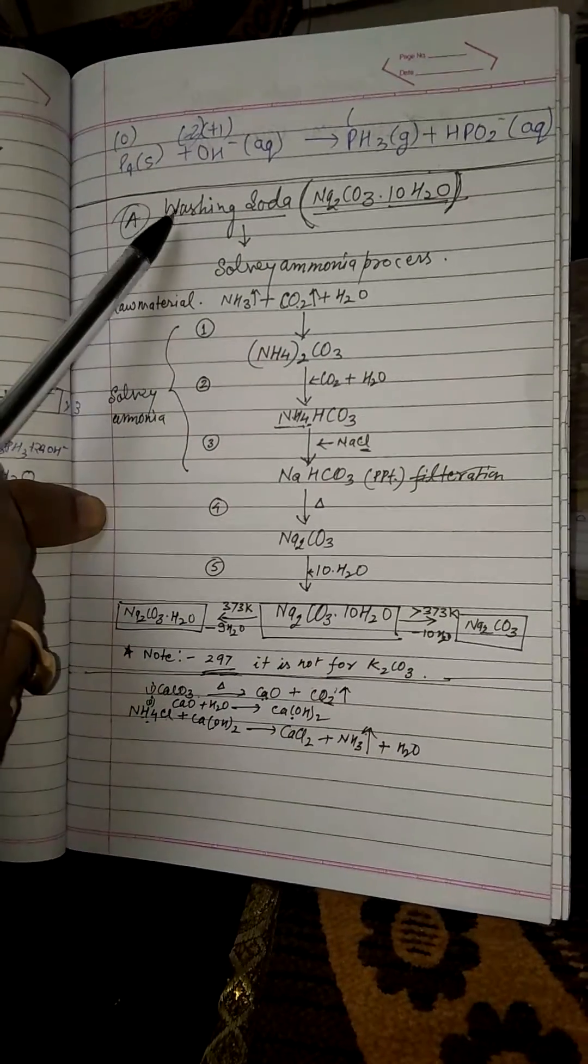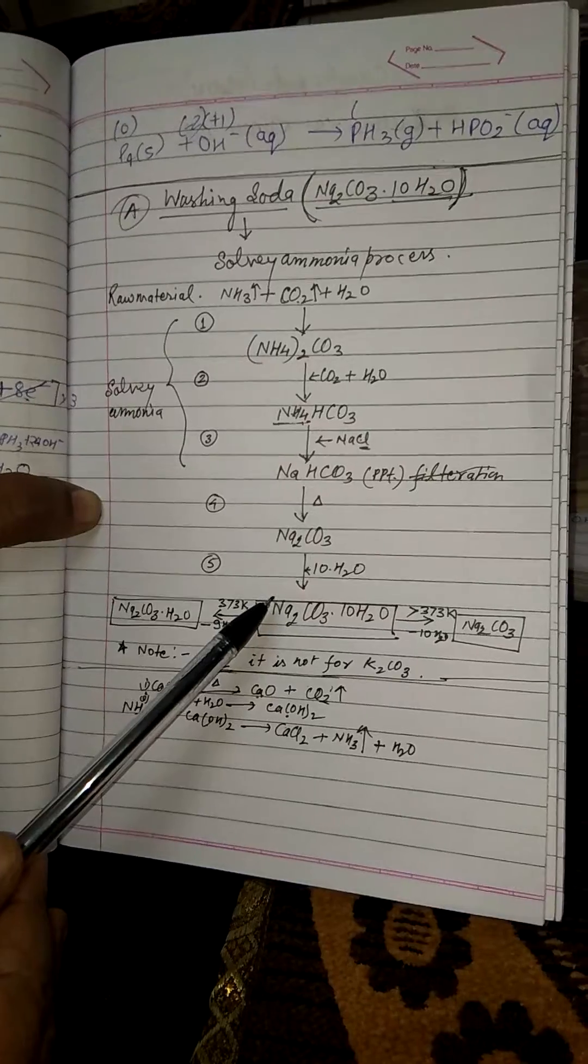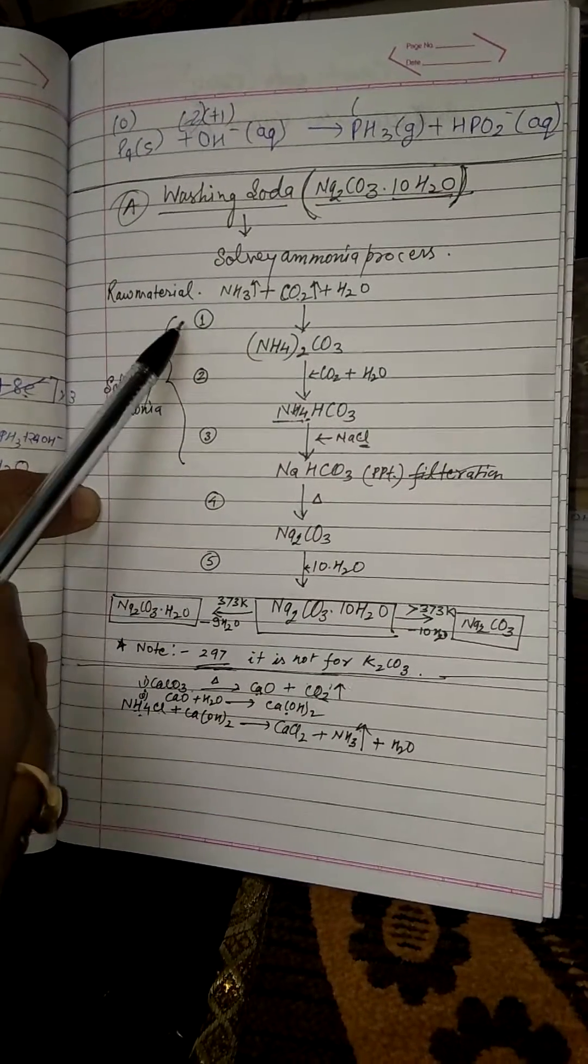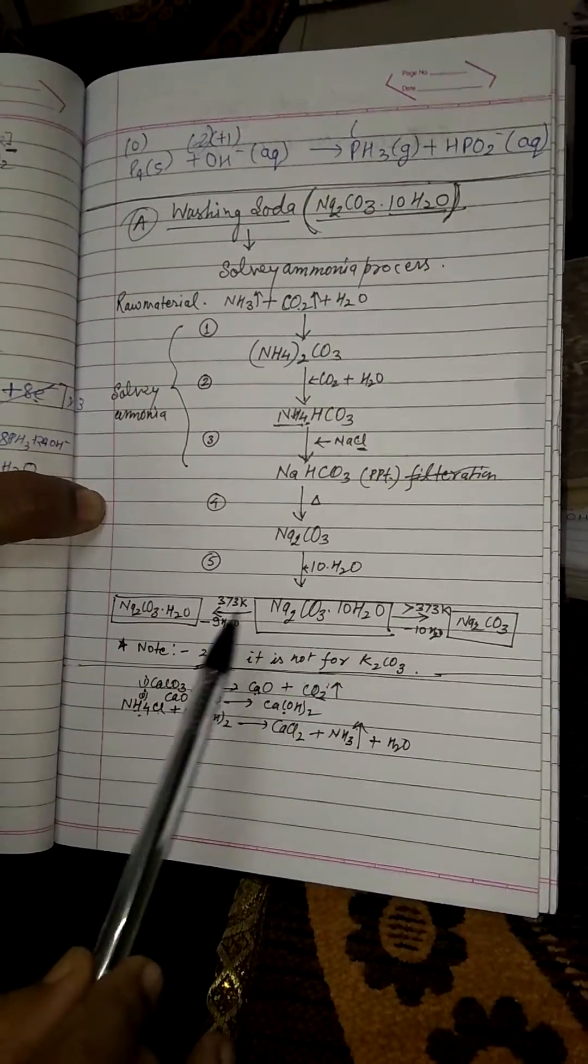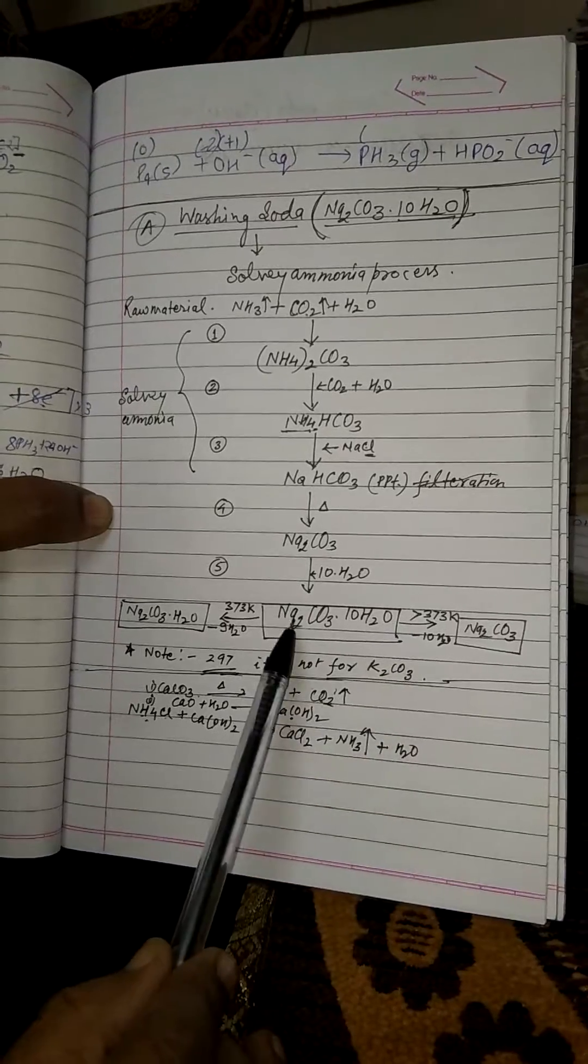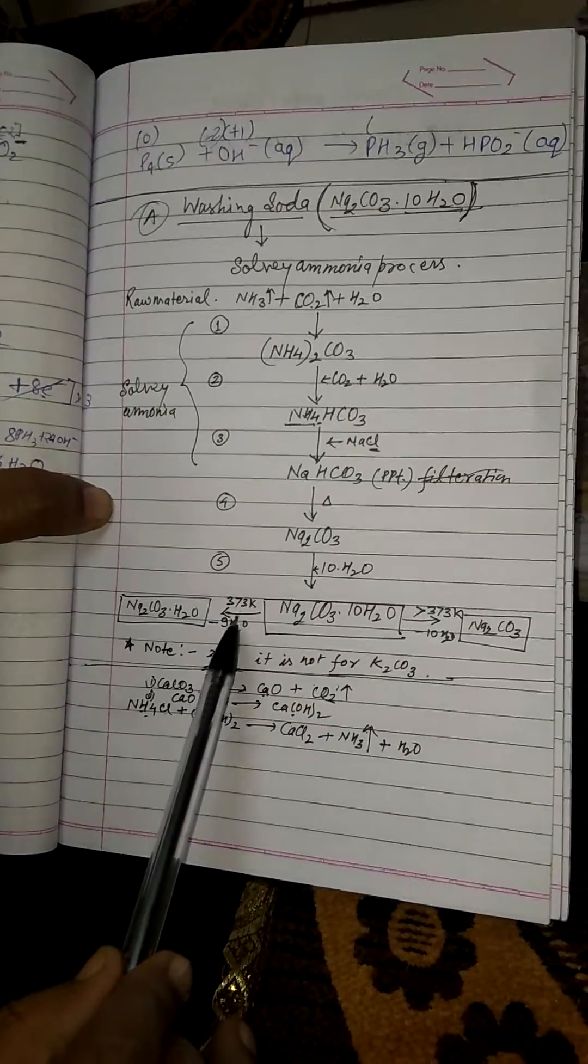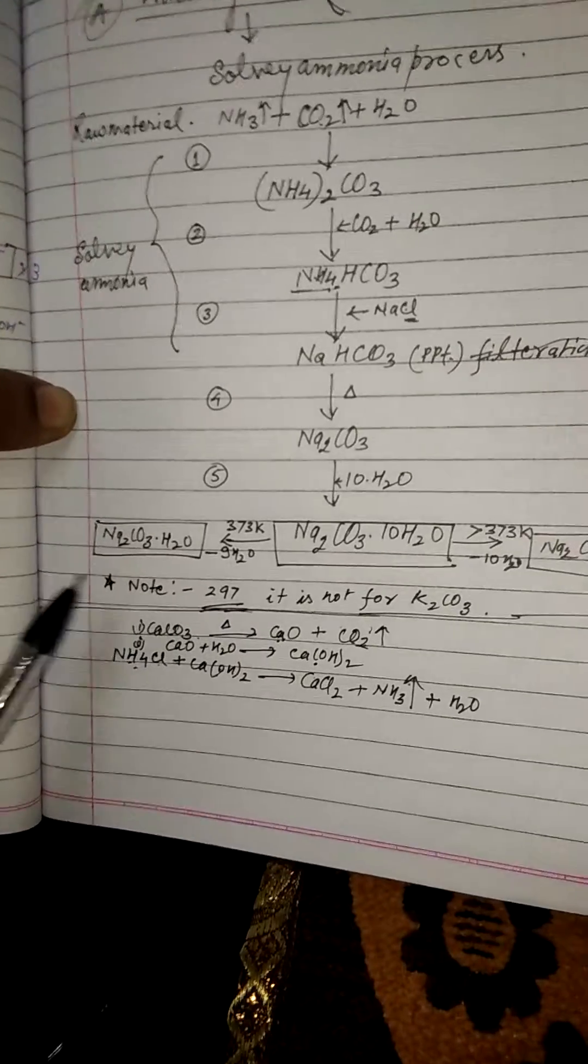These are the simple memory steps. Now you write reactions 1, 2, 3, 4, and 5. Two important things: if you heat it up to 373 Kelvin, then...